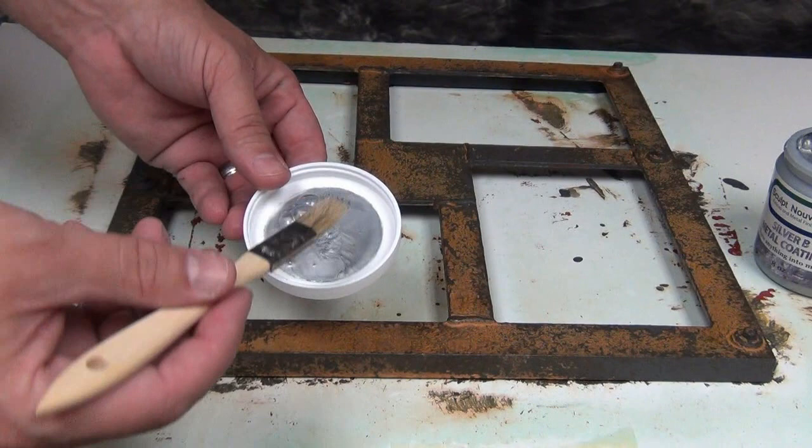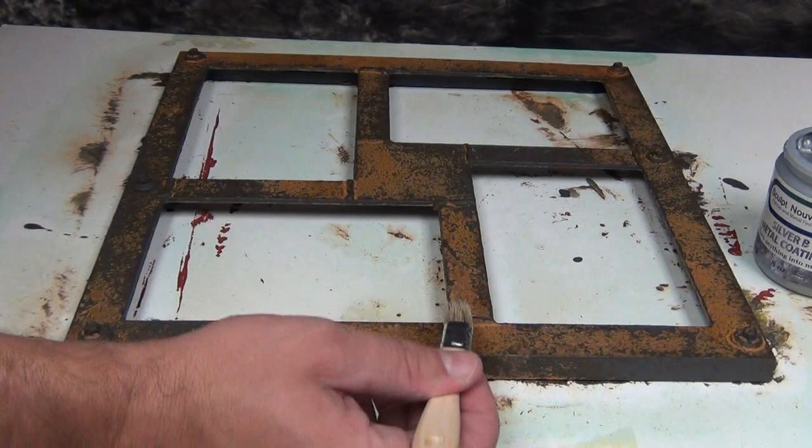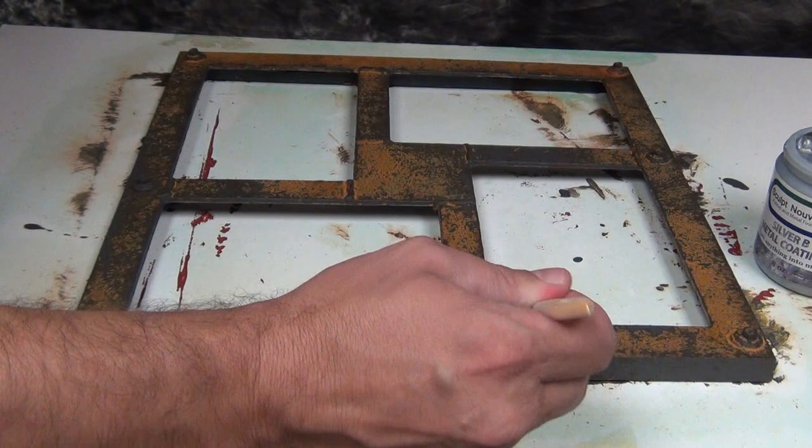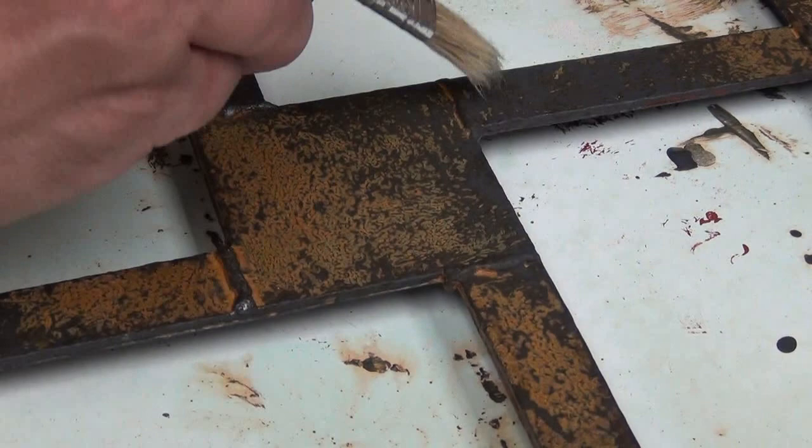One of the things I do that really adds a lot of realism is dry brushing a little bit of the Silver B coating over the welds and the corners and any exposed hardware that would naturally abrade and scuff with use. That gives the appearance of iron or steel abraded and showing through that rust.